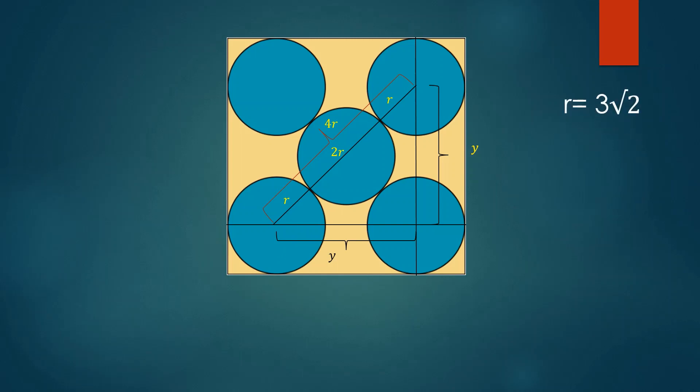Thus by Pythagoras theorem, we obtain 4r square equals y square plus y square. Which gives y to be 12. Now x, which is the side of the square, is simply y plus 2r.